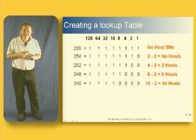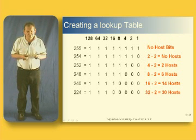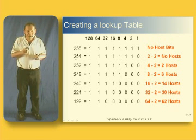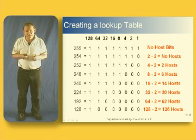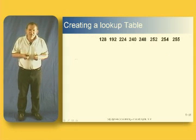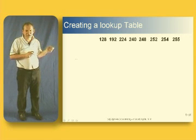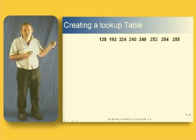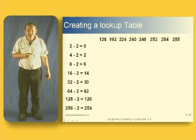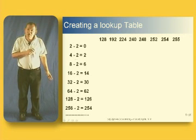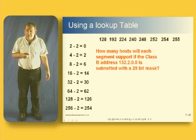240 gives us 16 possible combinations in 4 host bits; subtract 2 gives us 14 hosts. We're creating a table that tells us how many hosts are applicable for each mask — across the top we put the subnet values: 128, 192, 224, 240, 248, and so on. Down the left-hand side we have the number of hosts applicable for each number of host bits, and we use this table to calculate the number of hosts we need.